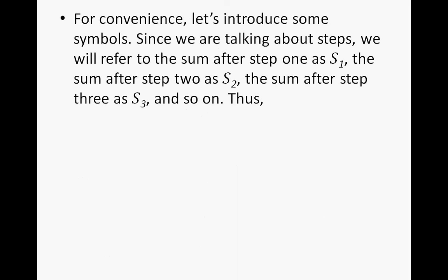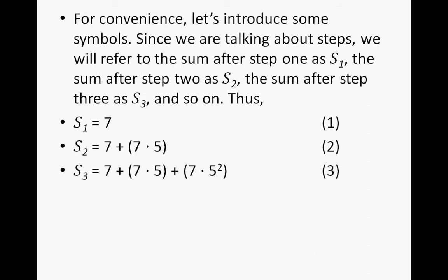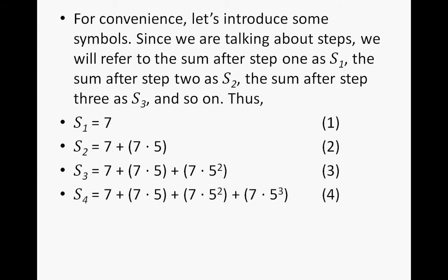For convenience, let's introduce some symbols. Since we're talking about steps, we will refer to the sum after step 1 as S sub 1, the sum after step 2 as S sub 2, the sum after step 3 as S sub 3, and so on. Thus, S sub 1 equals 7. For S sub 2, it would be 7 plus 7 times 5. For S sub 3, it would be 7 plus 7 times 5 plus 7 times 5 squared. And you get the picture.